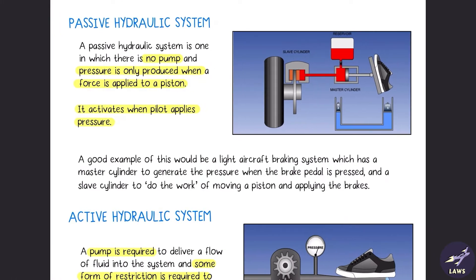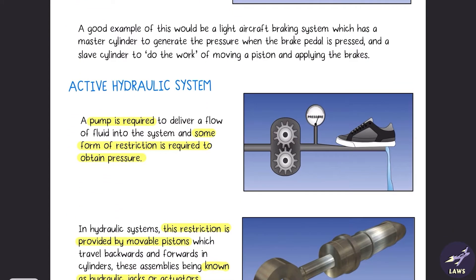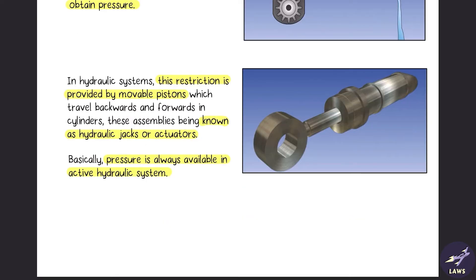We have two types of hydraulic system. One is passive hydraulic system, in which there is no pump — the pressure has to be provided by the pilot. This type of system is used in some small hydraulically operated aircraft. In an active hydraulic system, a pump is required to provide a positive flow to the liquid, so pressure is always available. In passive, we have to provide pressure — that is the difference.